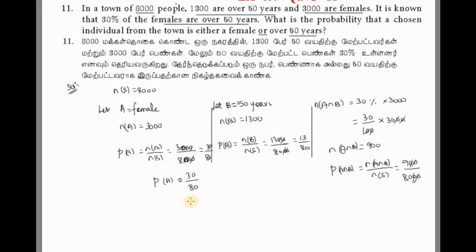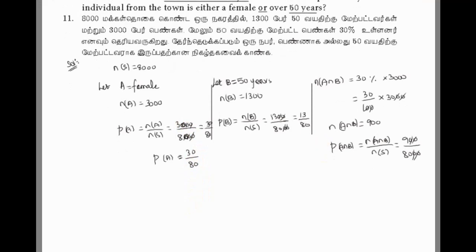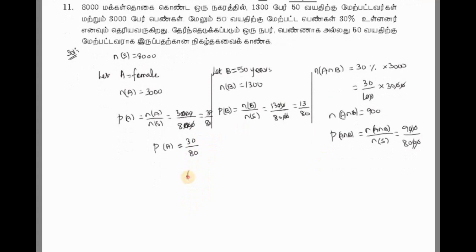Now we apply the formula - the addition probability theorem formula, APT formula. P(A∪B) equals P(A) plus P(B) minus P(A∩B). This is the formula. P(A) value is 30 by 80. P(B) is 13 by 80. P(A∩B) is 9 by 80.